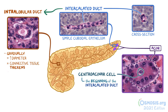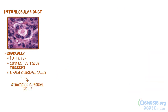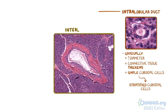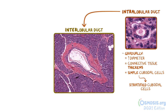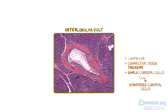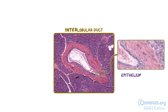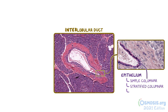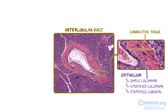The epithelium will also transition from simple cuboidal cells to stratified cuboidal cells. The intralobular ducts then drain into the interlobular ducts, which are located between the lobes but within the septa. These ducts are lined with epithelium that can be simple columnar, stratified columnar, or stratified cuboidal epithelium, and have a very thick layer of connective tissue surrounding them.